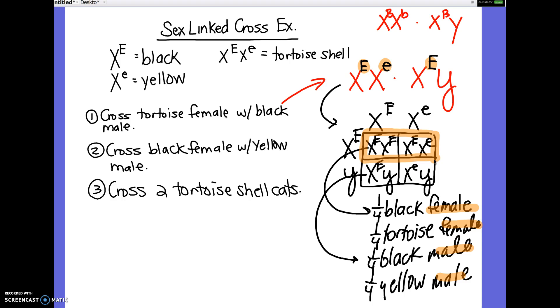So I'm going to pause for a sec. Try these two crosses. Number two, cross a black female and a yellow male. And then number three, two tortoiseshell cats. Take five minutes, and then we're going to regroup. All right, so let's look at number two. So we've got a black female, a yellow male.